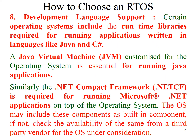The final functional requirement is development language support. Operating systems include runtime libraries for running applications written in languages like Java and C#. A Java Virtual Machine (JVM) is required for running Java applications, and the .NET Compact Framework is required for running .NET applications. So choose an OS which includes components like JVM and the .NET Compact Framework.